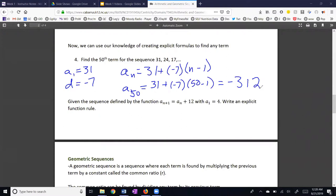The next question says, given the sequence defined by the function an plus 1 is equal to an plus 12, in other words, to get the next term you add 12 together with the fact that a1 is 4, write an explicit formula. An is equal to the first term, which is 4, plus the common difference, which is 12, times n minus 1.